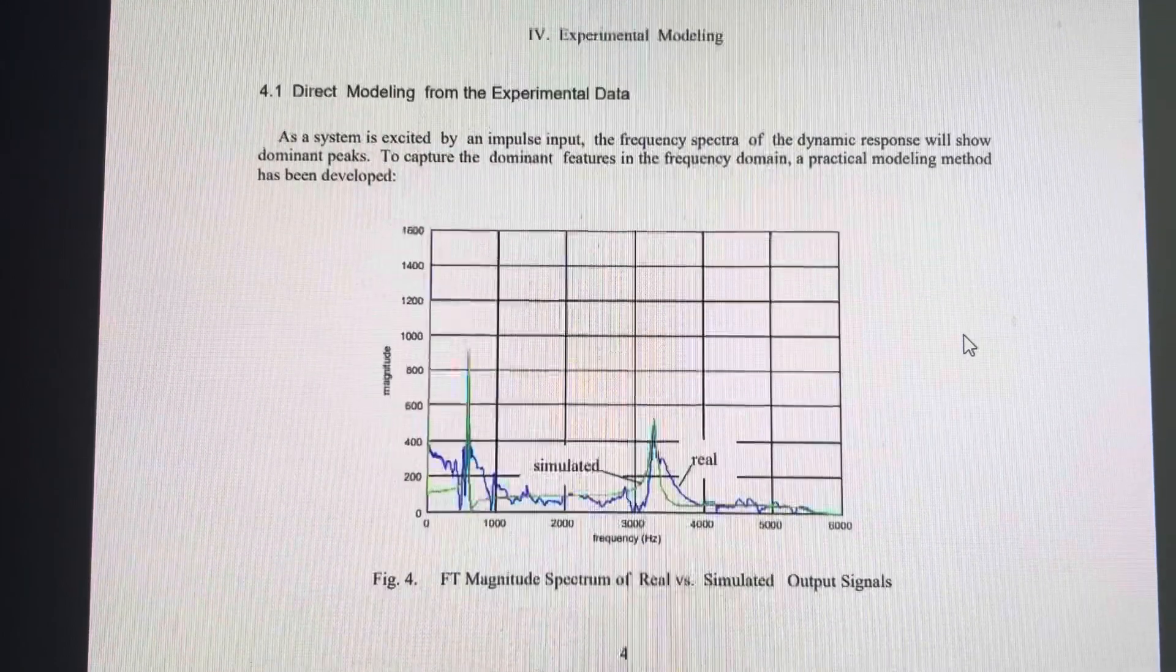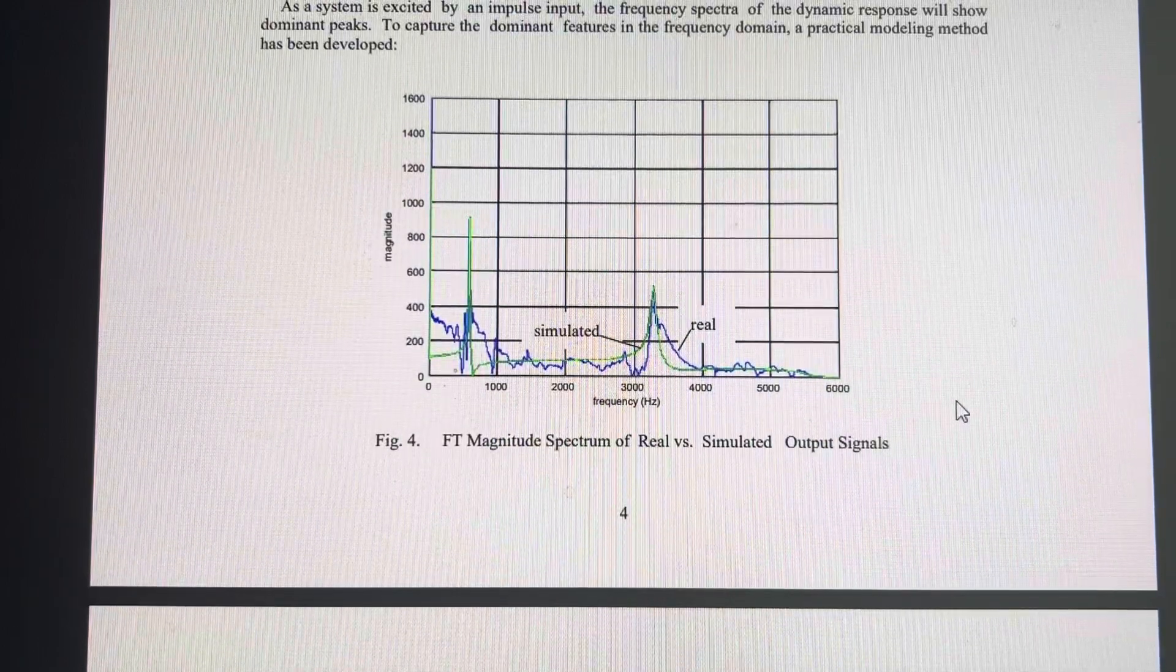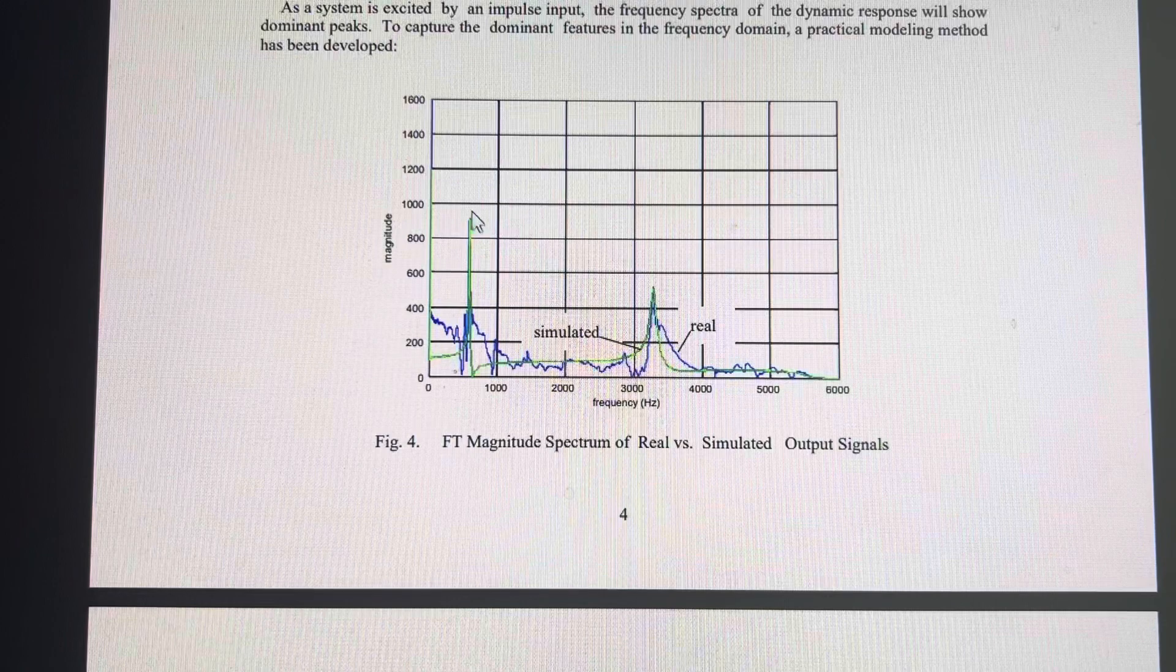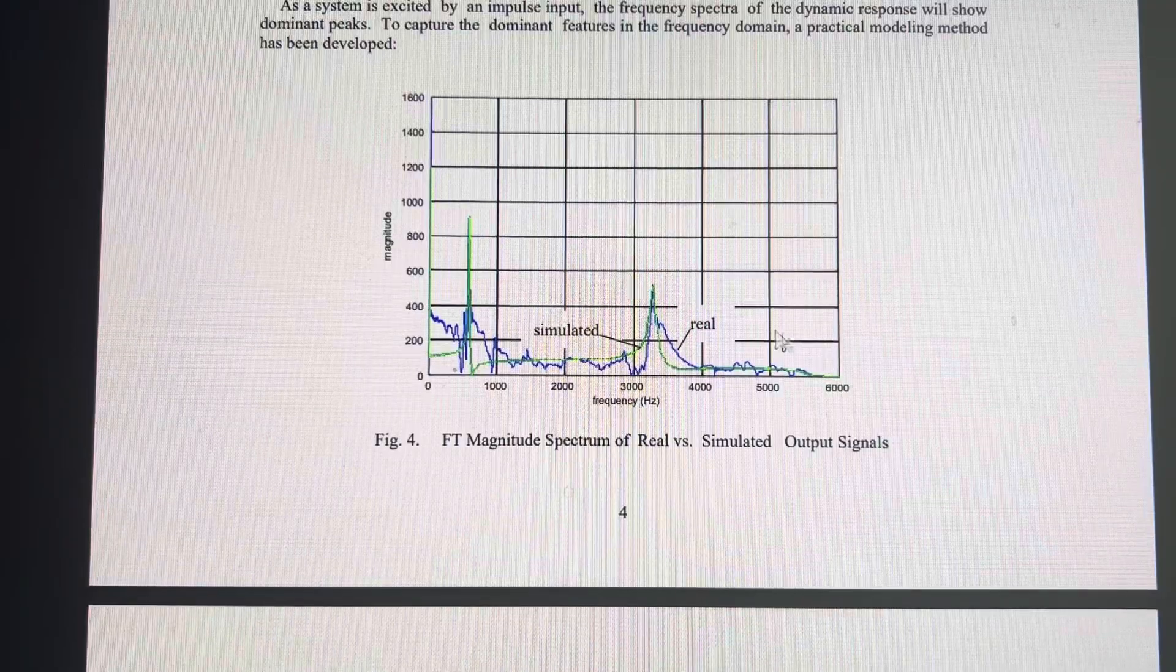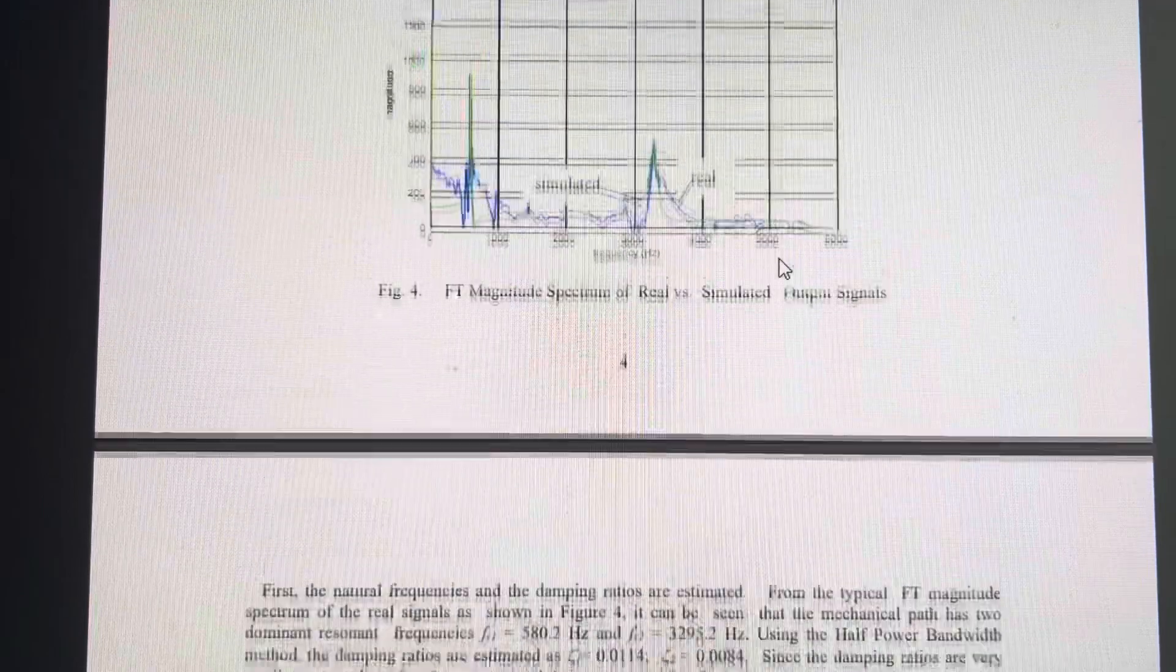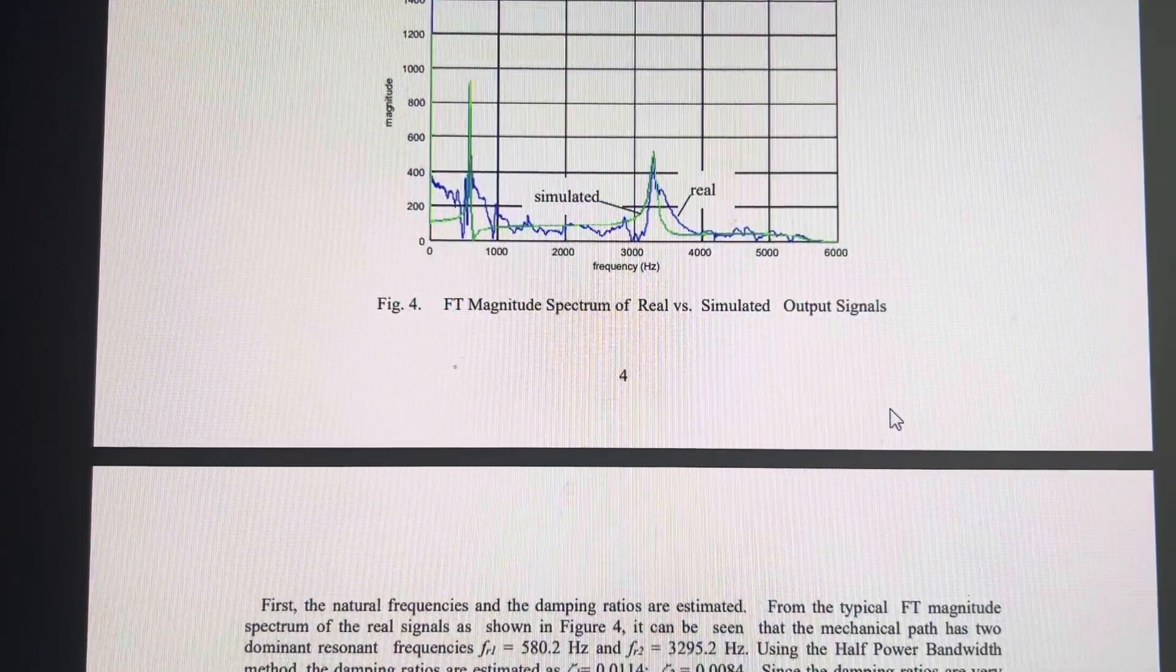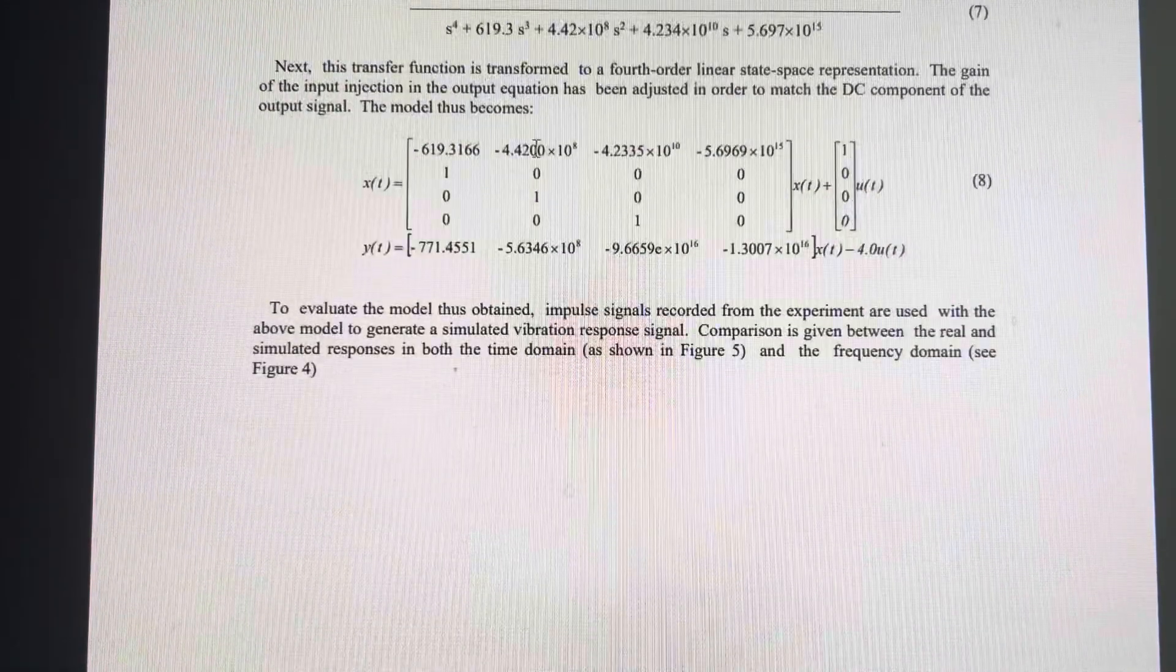With this vibration data, we do Fourier transform and have the magnitude versus frequency. Then we identify the natural frequency, the highest natural frequency, and model that as a transfer function. Since this is only modeled from the magnitude-frequency relationship, the phase information is missing.